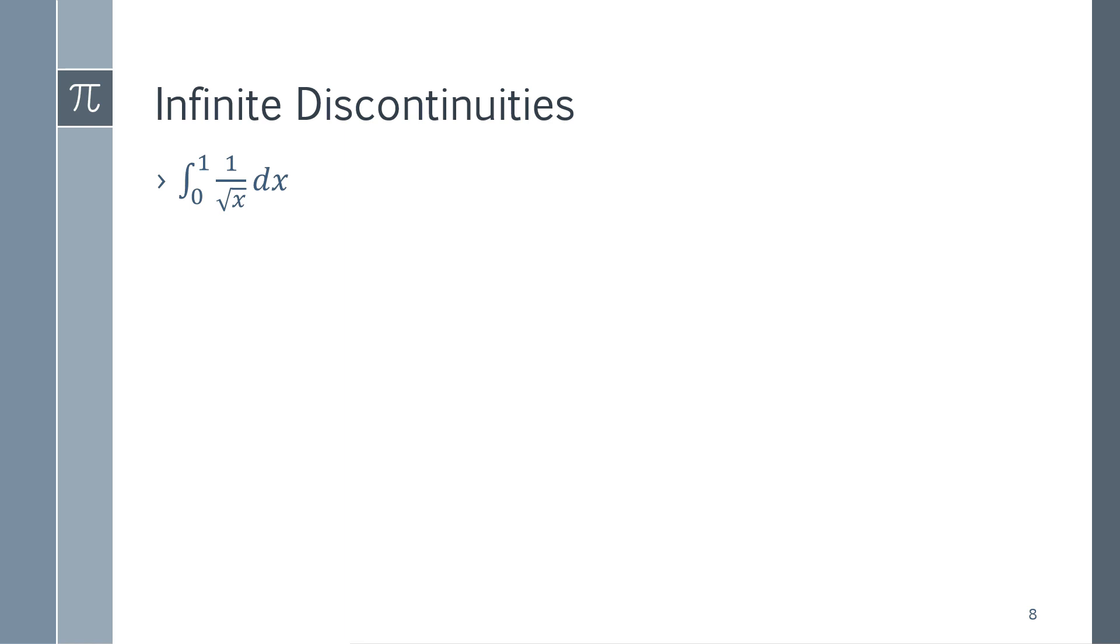So, if I'm looking at the integral from 0 to 1 of 1 over the square root of x, this looks like it's a perfectly fine integral to deal with, but there's a vertical asymptote at x equals 0.